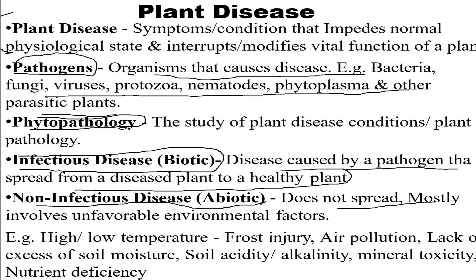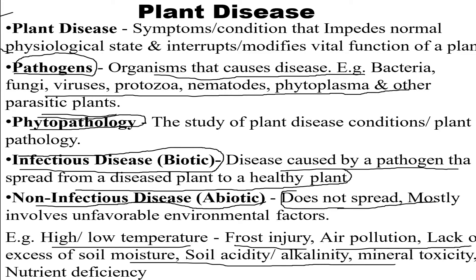Non-infectious disease does not spread through any infectious plants, but happens due to unfavorable conditions such as rain, cold, or heat. High and low temperatures cause frost injury, air pollution, lack or excess of soil moisture, soil acidity or alkalinity, mineral toxicity, and nutrient deficiency — these are some of the factors that may result in plant diseases.